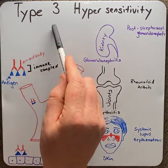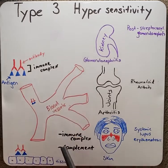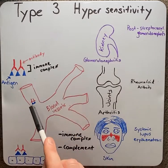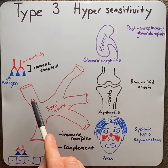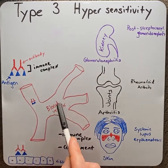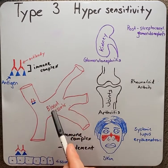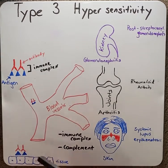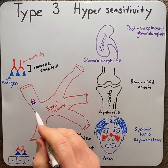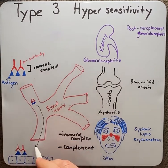In type III reactions, because the immune complex forms within the circulation, the harmful effects are not where they form — rather, it's where they deposit.